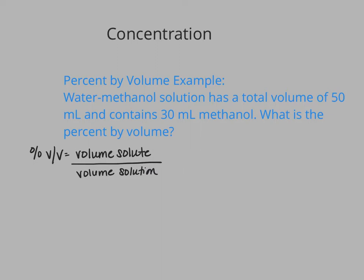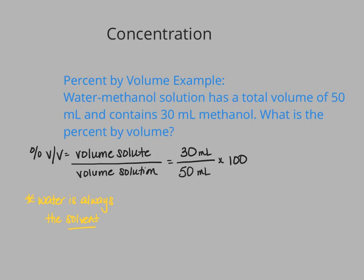Except when water is involved — whenever there's water, water is always going to be the solvent. So even though we have more methanol, water is still going to be the solvent. So our methanol in this case is going to be the solute. Now that we know which is our solute and solvent, we can fill in our equation. The volume of our solute is going to be our volume of methanol, which is 30 milliliters, and the volume of solution they've given us is 50 milliliters. As long as your units match, you don't have to convert to liters. So we're going to take 30 divided by 50 times 100, and our percent by volume is going to be 60% V/V.